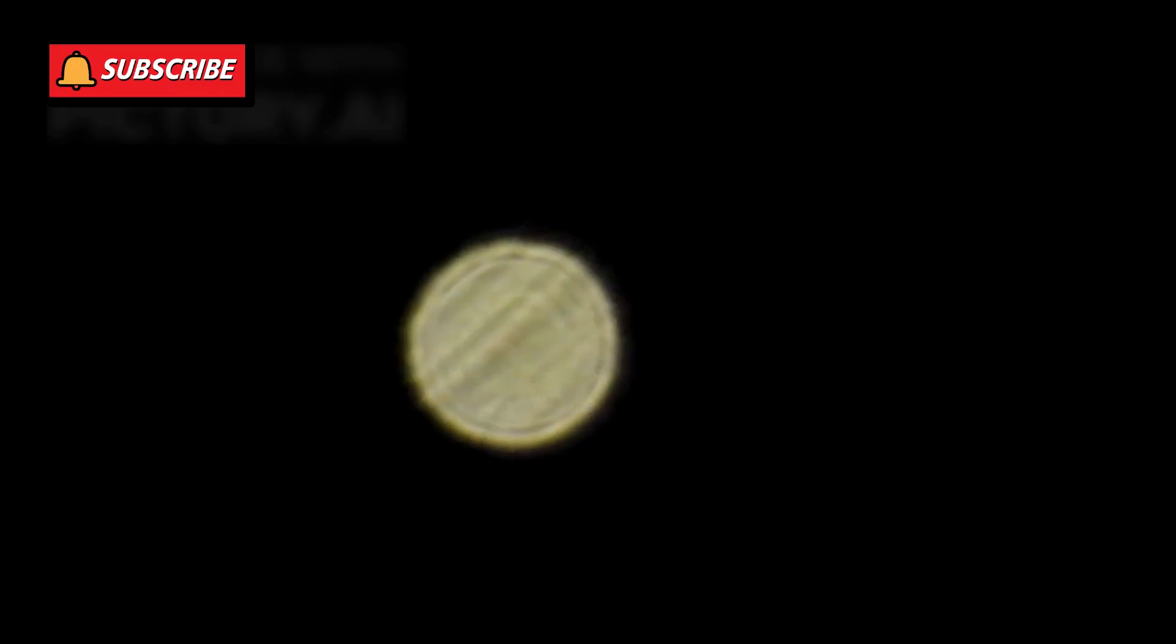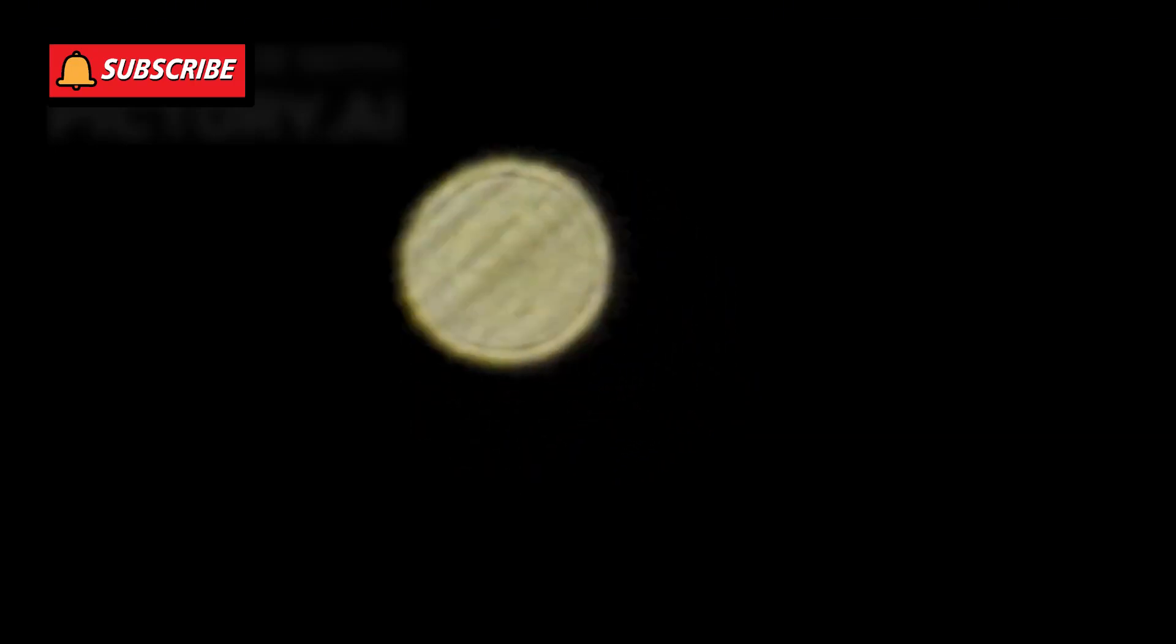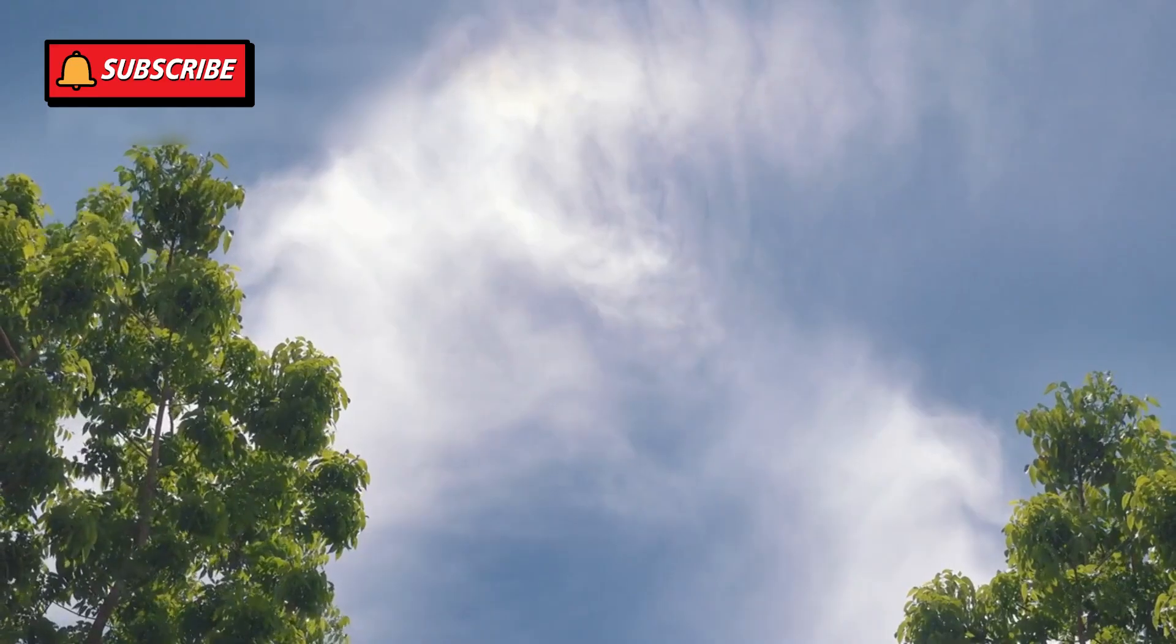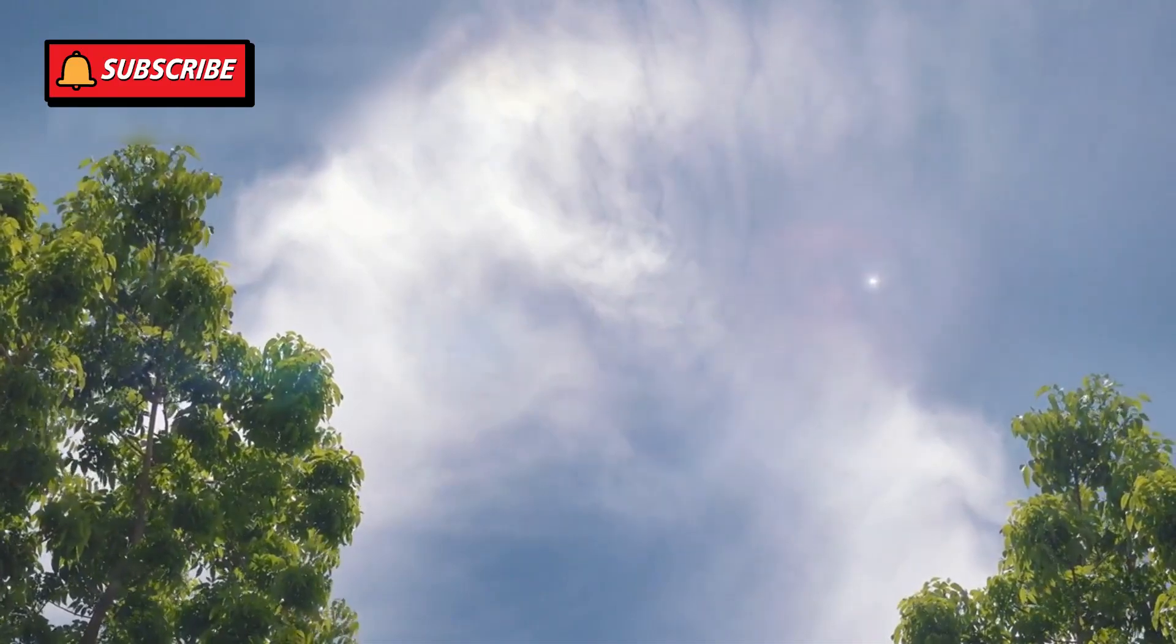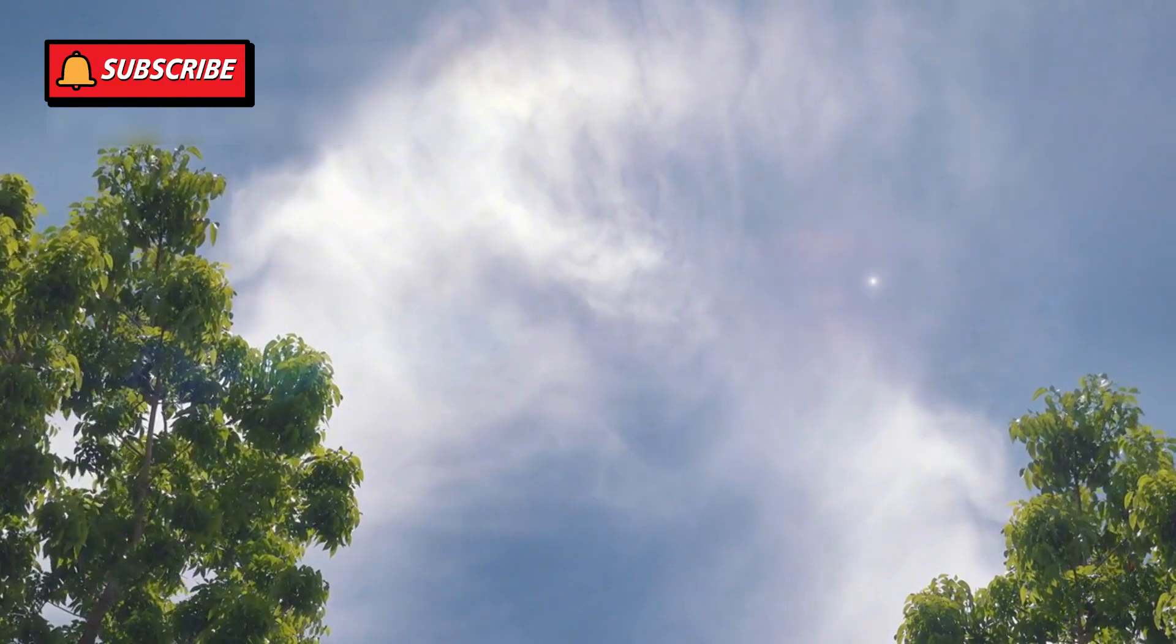Betelgeuse is roughly 650 light years away, which might seem distant, but in cosmic terms, it's practically in our neighborhood. This closeness means that any major event, like a supernova, would be visible from Earth, possibly even during the day.